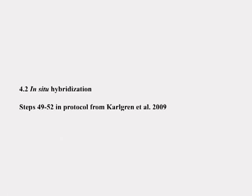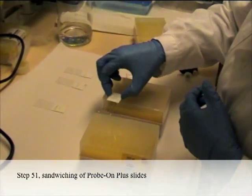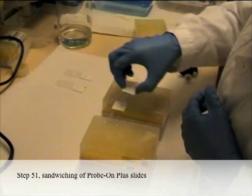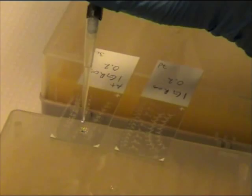4.2 In-situ hybridization. Steps 49 to 52 in the protocol. Step 51: Sandwiching of ProBond Plus slides. The solution is viscous. Try to avoid bubbles.